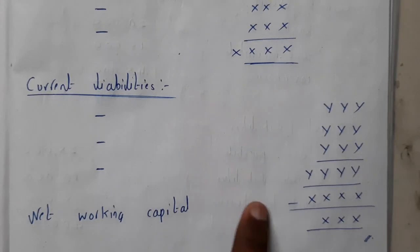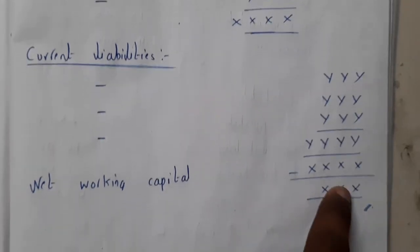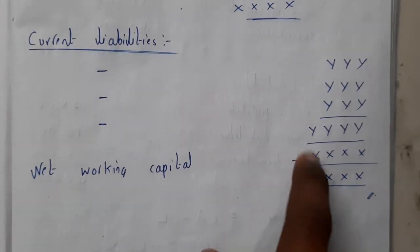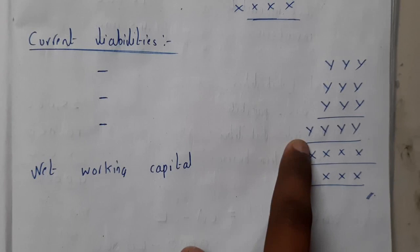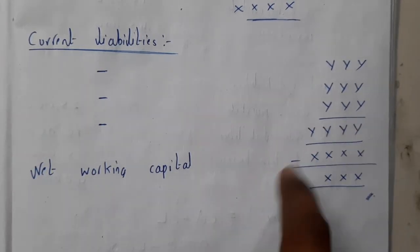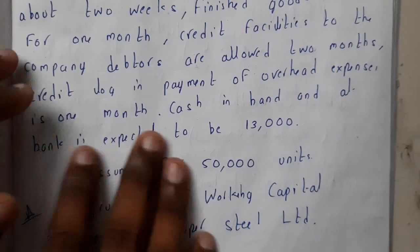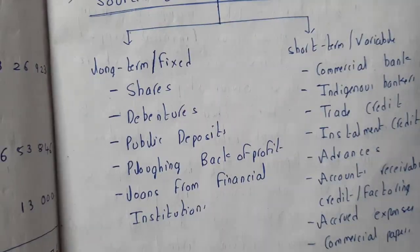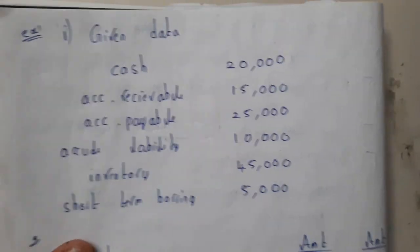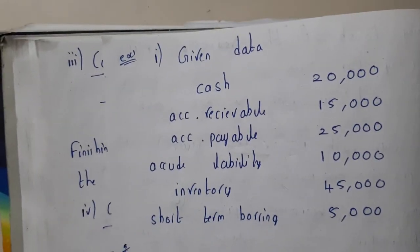Similarly, current liabilities you'll be writing here and totaling here. So let's assume you got four Y's here and four X's, so you'll be subtracting them to get some result. Basically you need to subtract current assets minus current liabilities — sorry, I did that in reverse there. So let us go through a small example, and in the next lecture we'll be going through some more complex examples.